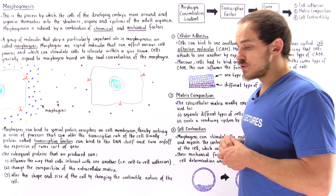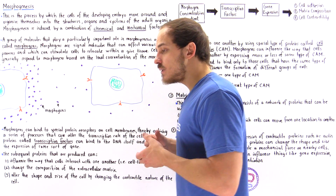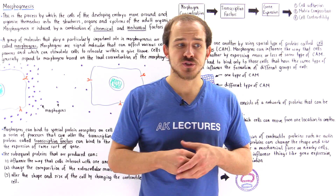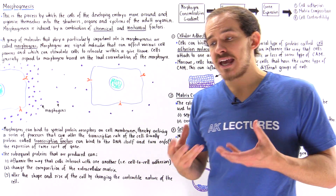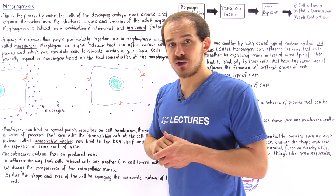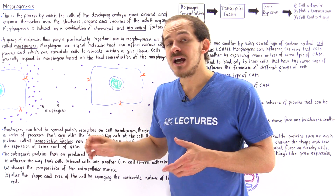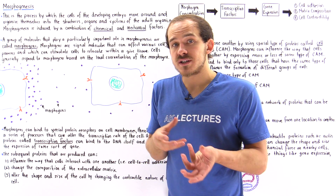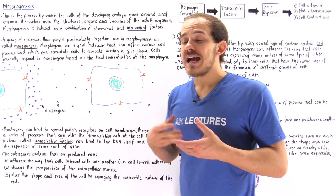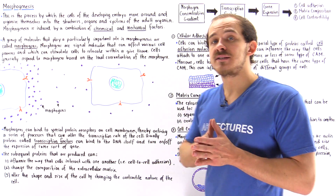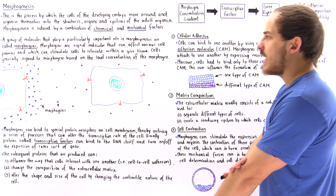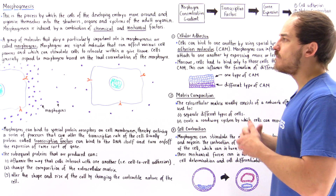A group of molecules that play a particularly important role in the process of morphogenesis are known as morphogens. Morphogens are chemicals, molecules that act as signal molecules and that can actually affect the behavior of the cell. For example, they can change the different types of processes that take place within the cell and they can actually cause that cell to migrate — to move from one location to another location within that nearby developing tissue.